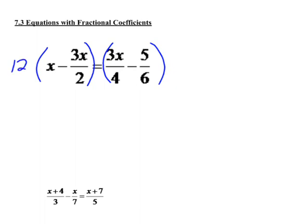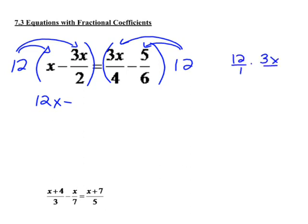When we multiply by 12, we distribute it to both pieces here, as well as both pieces over here. Well, 12 times x is 12x, and then we need to do 12 times 3x over 2. So 12 over 1 times 3x over 2. Look for what cancels. This should always cancel, this denominator should. That's why we chose a common denominator. And 6 times 3x is 18x.